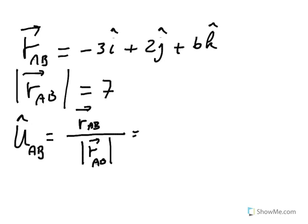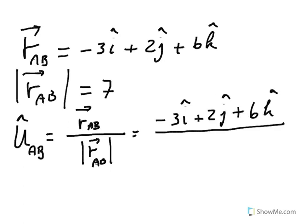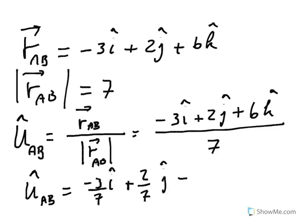So that would be negative 3i plus 2j plus 6k, that's the position vector, divided by the magnitude, which is 7. You could leave it like that, but you could actually divide by 7 each component. So, negative 3 over 7 i, plus 2 over 7 j, and then plus 6 over 7 k.